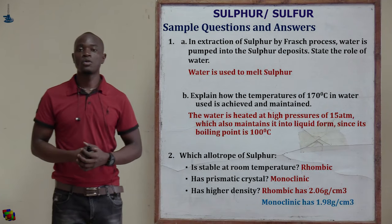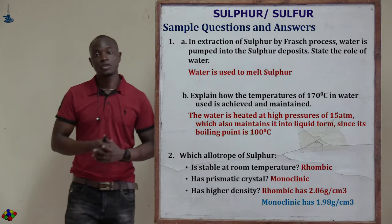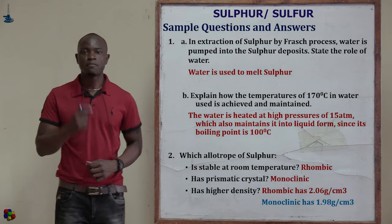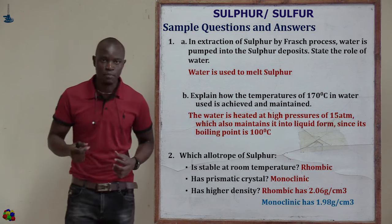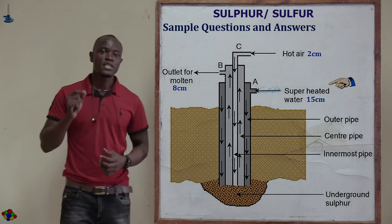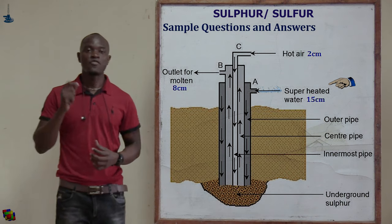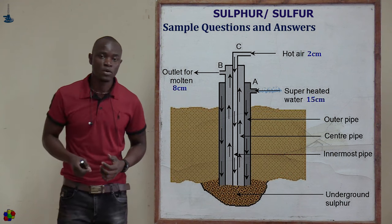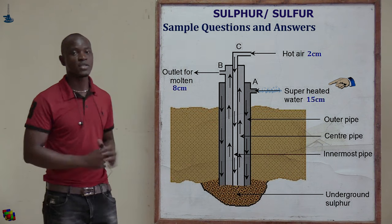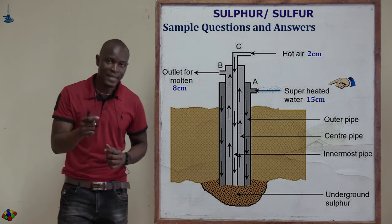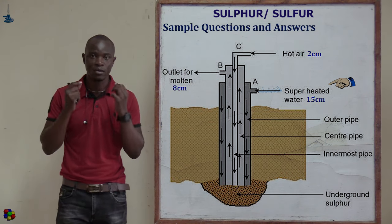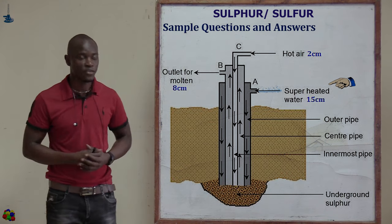Let's look at the questions which we might be asked in this section. The first question is about extraction of sulfur by the Frasch process. Water is pumped into the sulfur deposit. The role of superheated water at 170 degrees Celsius and 10 atmospheres is to melt the sulfur.